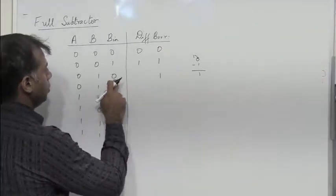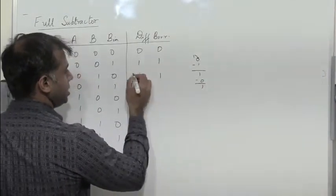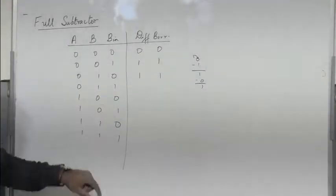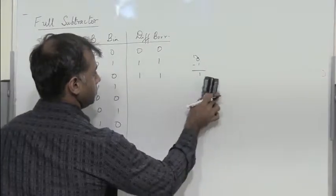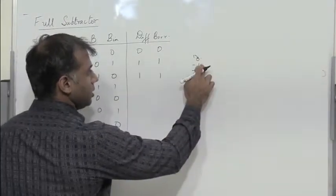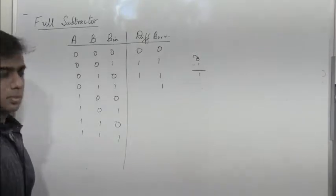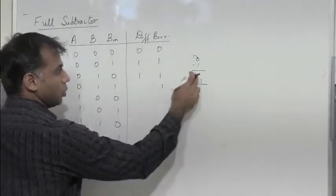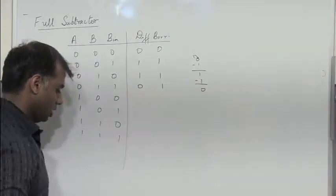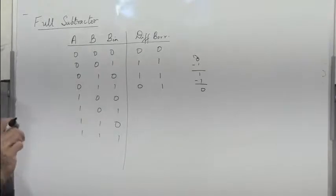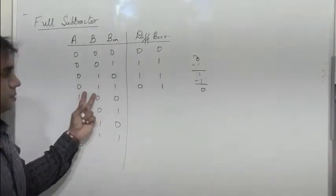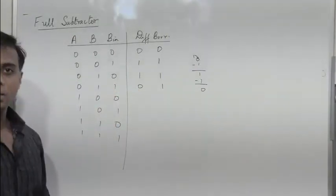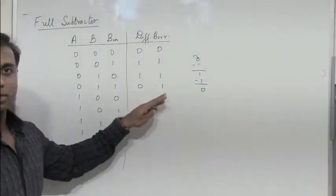Then 1 minus 0: the difference is retained. Next, for 0 minus 1 minus 1: 0 minus 1 gives a borrow of 1, so I get 1. But then I have minus 1 again, and 1 minus 1 gives difference 0. So I get 0 here. If we consider two bits at a time, find the intermediate result, and then subtract the next bit, we will not make mistakes while entering the difference and borrow.